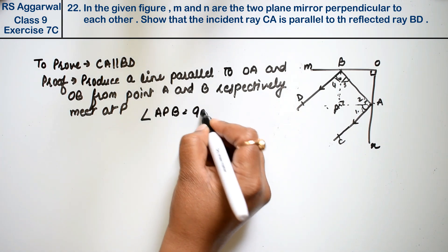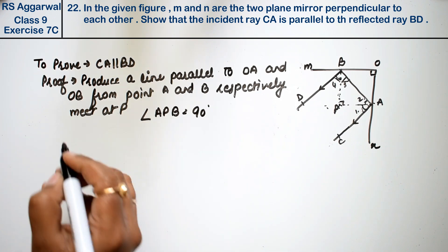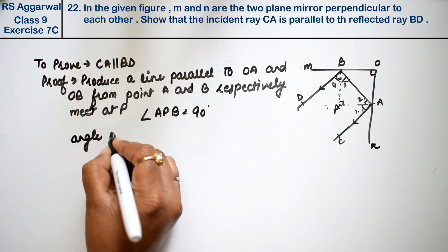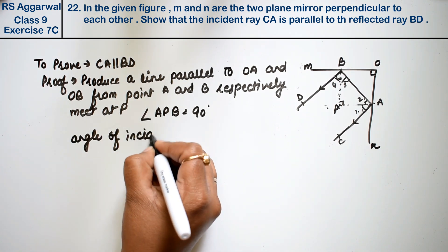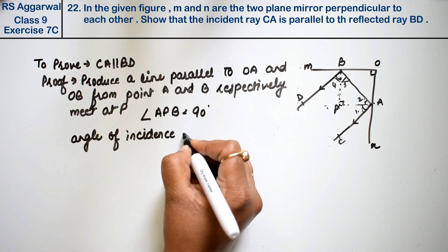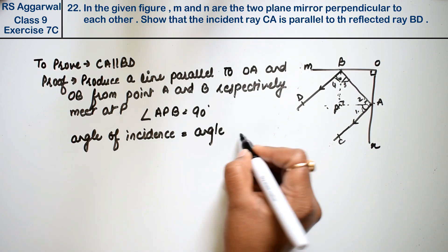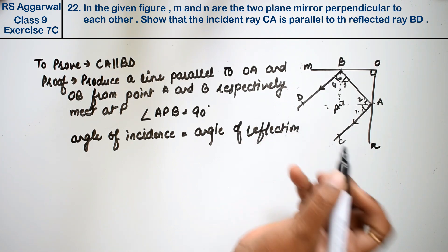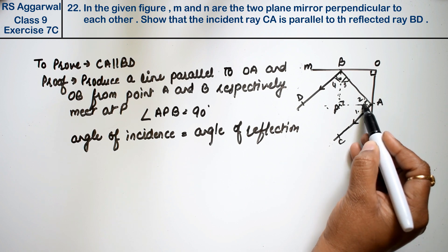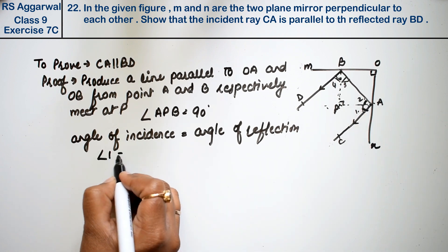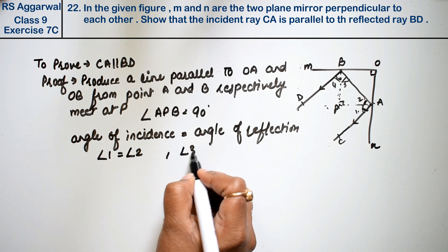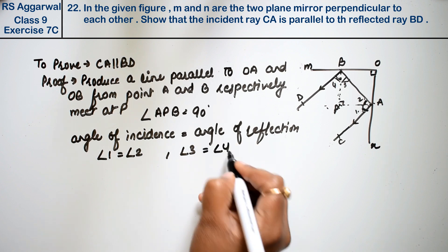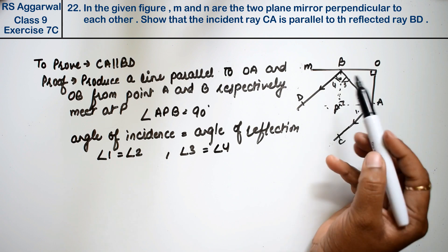This gives us 90 degrees, since the lines are perpendicular. Now, we know from science that the angle of incidence is equal to the angle of reflection — both these angles are equal. So angle 1 is equal to angle 2, and similarly angle 3 is equal to angle 4.